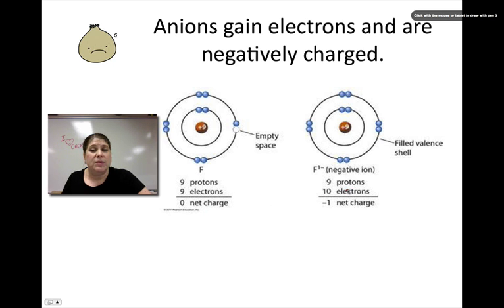When it gains electrons to become stable, it is now called the fluoride ion. It has an empty spot right here where it needs another electron to get a full shell. So when that one electron comes in here, we now have an extra negative. Nine protons, ten electrons gives you a minus one charge. So this atom now is an ion with a minus one charge.